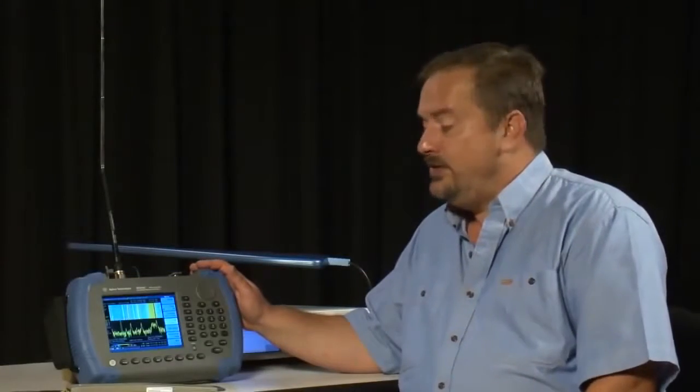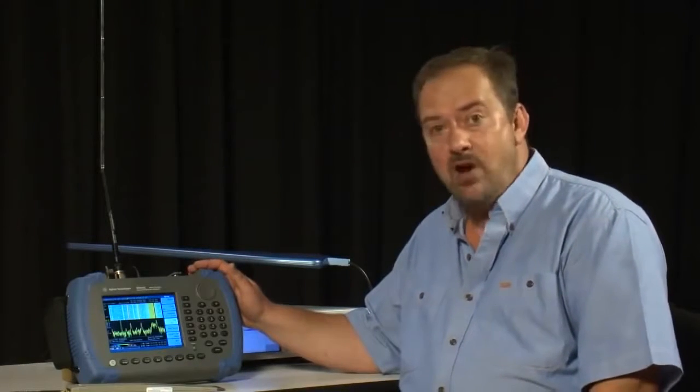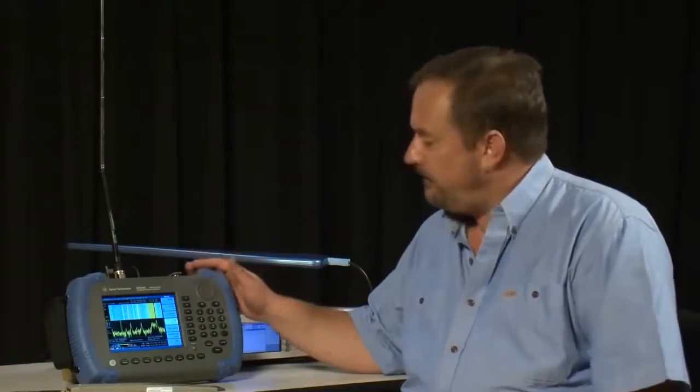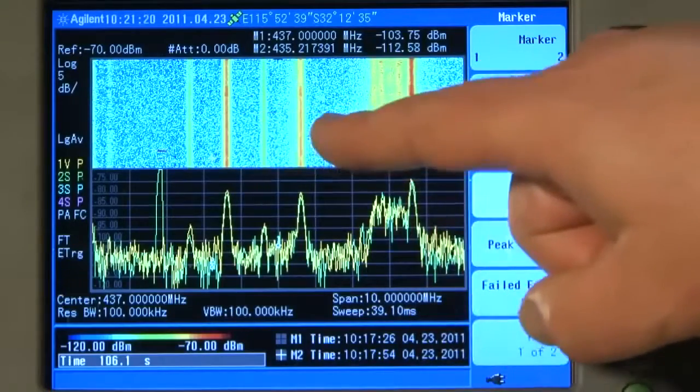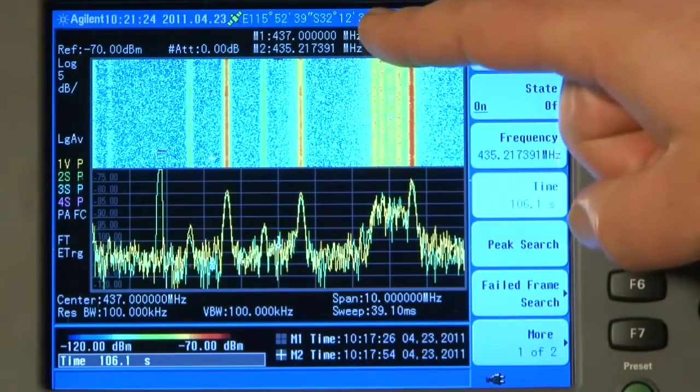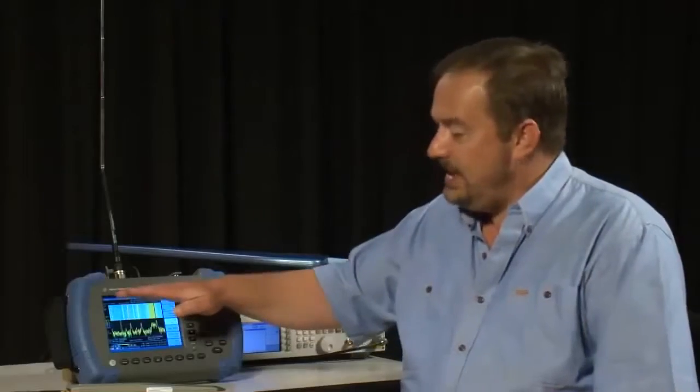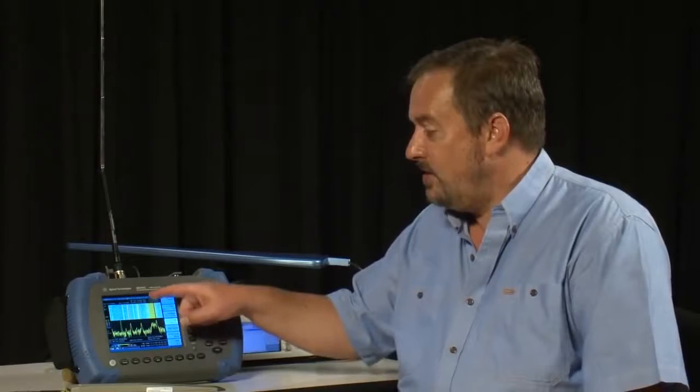And best of all, if we were using this in a site survey or drive test situation where we were mobile in a vehicle, monitoring, for example, and recording the signal strength of various repeater sites, the GPS position information is also stored with each record in the spectrogram. So, not only can we tell the frequency and the amplitude that each signal was, but also the signal strength at each geographic location as we drive around.